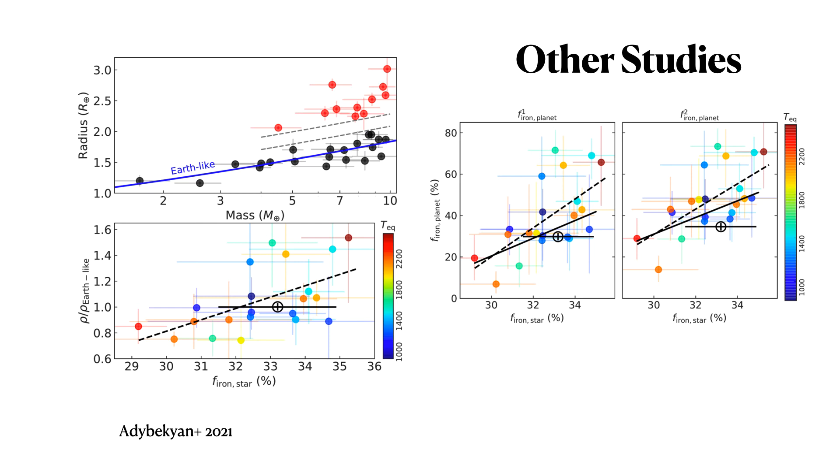Other intriguing work is the work by Adibekyan this year as well. And so they looked at, they looked at a population sense, but they looked at trends in the iron of planets and compared them to that of the iron of stars. And they seem to see a trend, these are two different interior models for the planets, but they seem to see a trend of more, the more iron-rich the star is, they seem to be forming a more iron-rich planet. So again, the data is a little bit large in their error bars, but it's an intriguing result that we should keep an eye on as our data set increases.